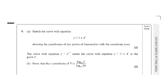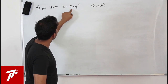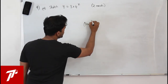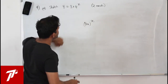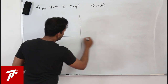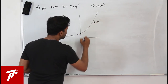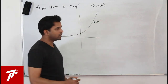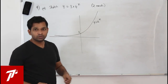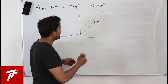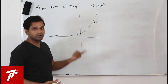Question number 9, Part A: sketch y = 3·4^x and show coordinates of any intersection with the axes. This is an exponential function. Any exponential y = a^x passes through (0,1) on the y-axis. Here y = 3·4^x, so when x = 0, y = 3×1 = 3.